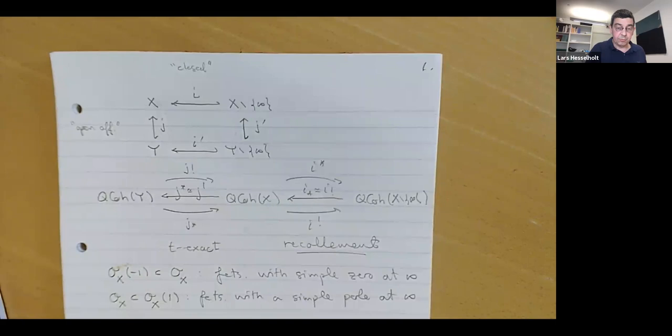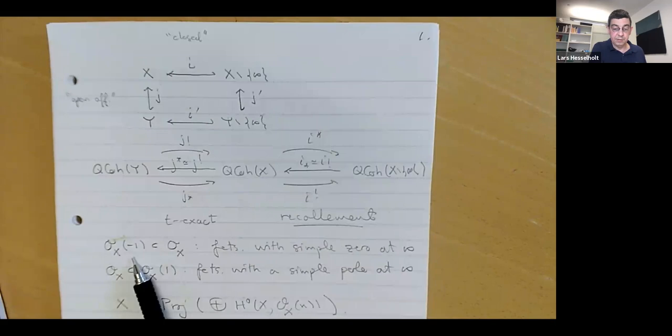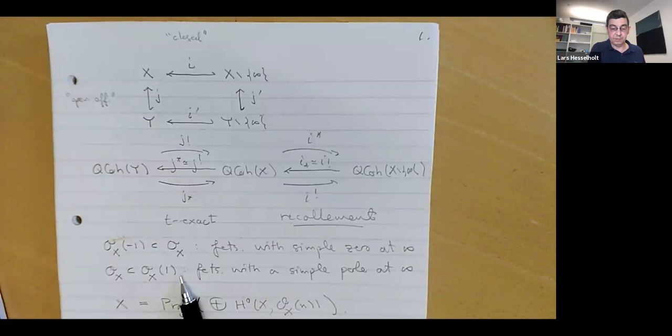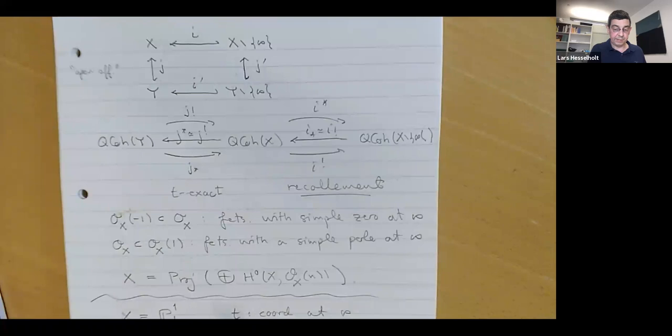Now on this curve we have the structure sheaves, and then we have the Serre twist, which we can think of as functions with a simple zero at infinity. And we have its dual, which we can think of as meromorphic functions with a simple pole at infinity. The way we get the curve is that the curve is part of a graded ring, which we get by taking global sections of all these Serre twists of the structure sheaves.